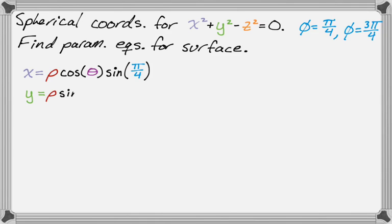y is equal to rho sine of theta, sine of phi. So something interesting is kind of happening here, where our two parameters in this case will be theta and rho, rather than theta and phi, which is almost always the case when you do these things. So our parameters are actually rho and theta.